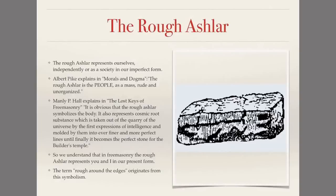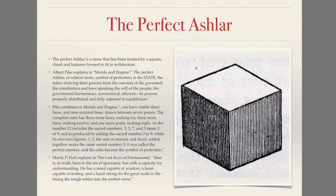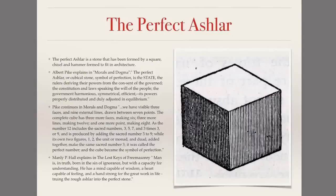Let's take a look now at the perfect Ashlar. The perfect Ashlar has a lot of things going on. It's a stone that's been formed by a square, a chisel, and a hammer in order to fit into architecture. We can take and stack these perfect stones and make beautiful cathedrals, fences, stairs — anything beautiful that you could imagine with this perfectly fit cube.